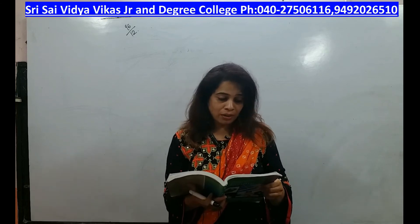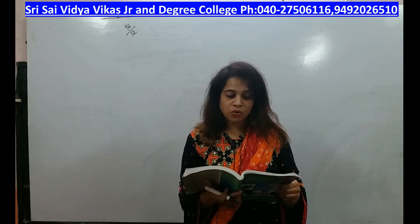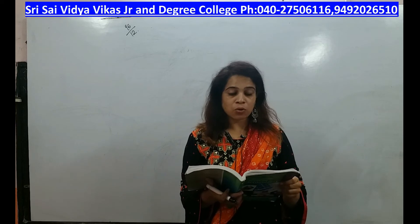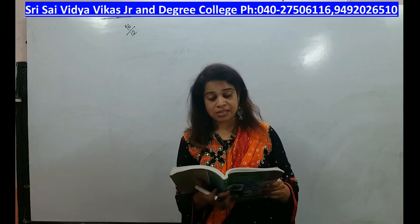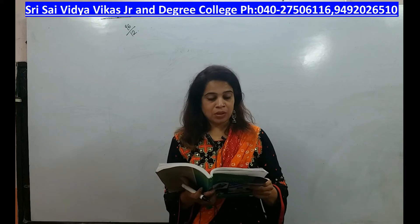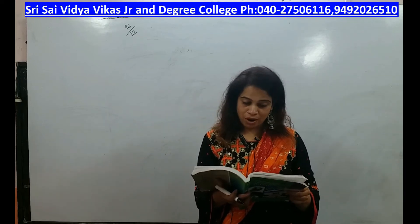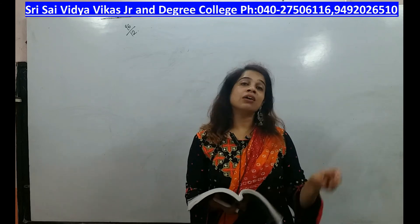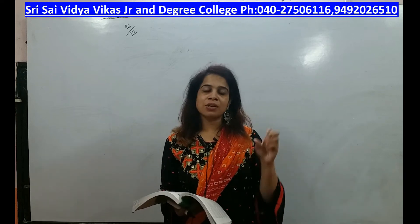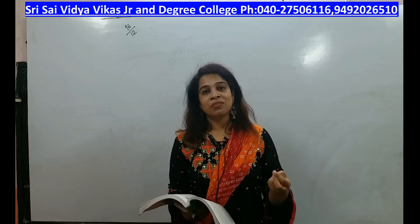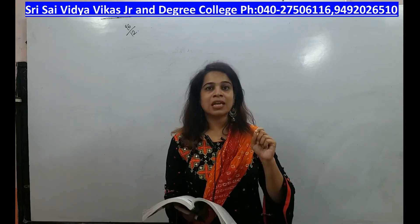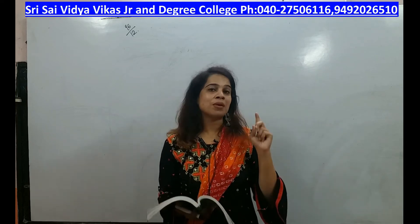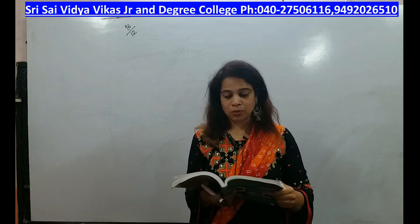Charan of Varangal consigned 250 cases of ayurvedic medicine to Ramu of Hyderabad. So Charan is going to be the consignor whereas Ramu is going to be the consignee. The cost of each case is rupees 300 but the invoice price is rupees 400 per case. Charan does not want to reveal how much profit he is making, so intentionally he is saying the price is 400, not 300. There is a difference of rupees 100 per case.